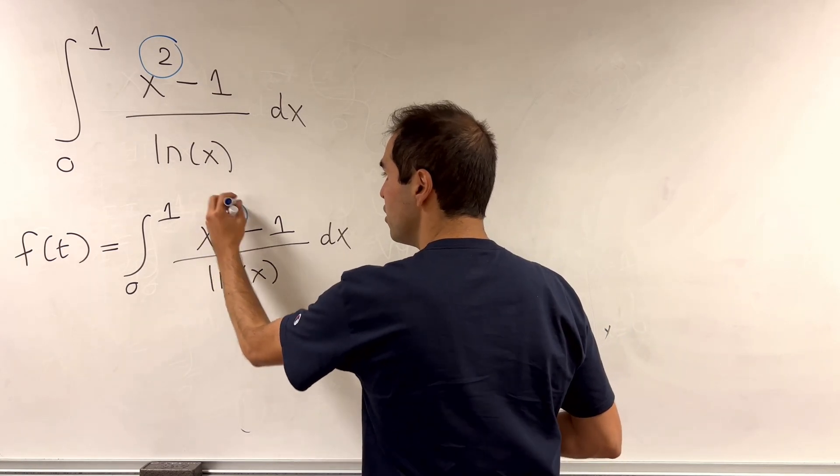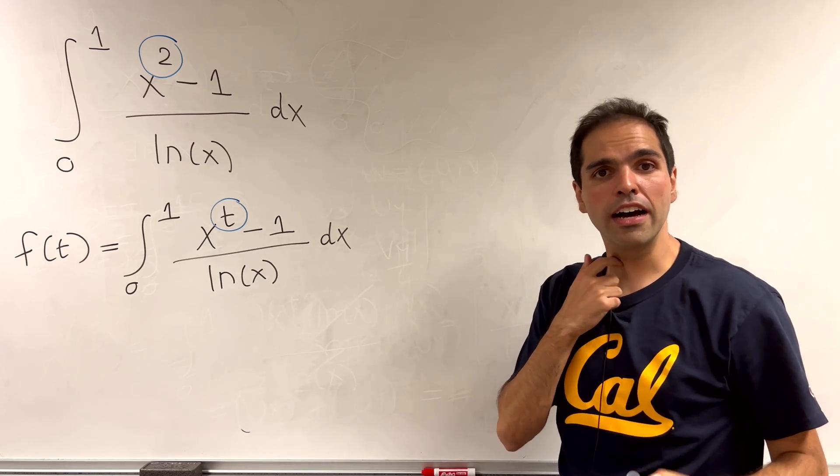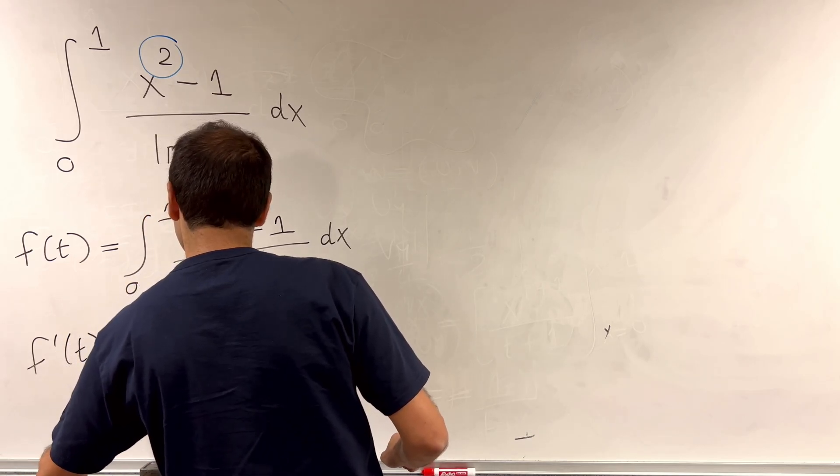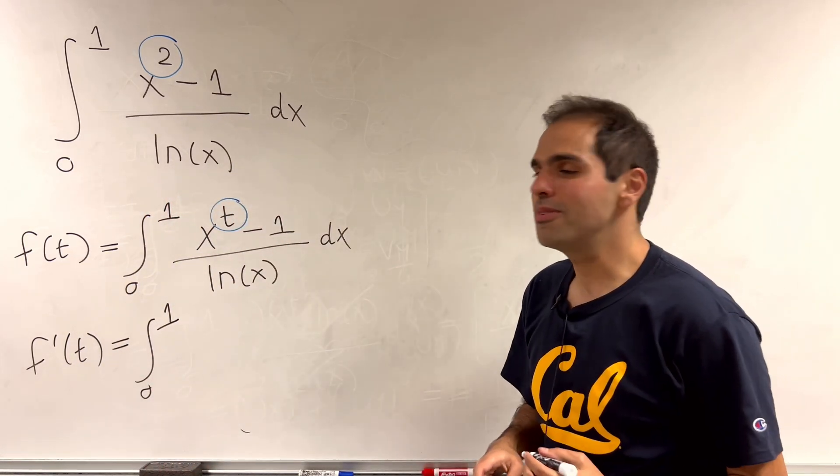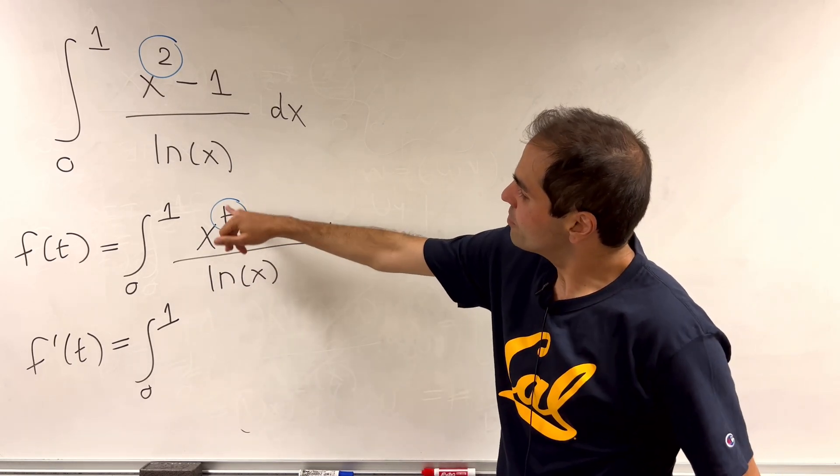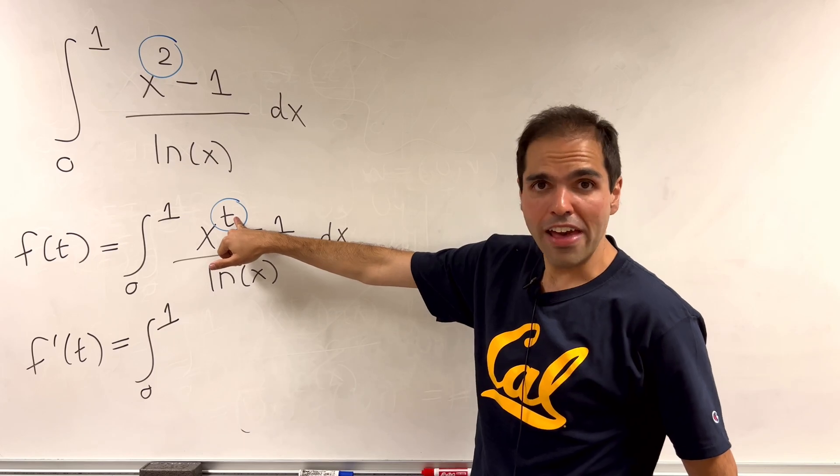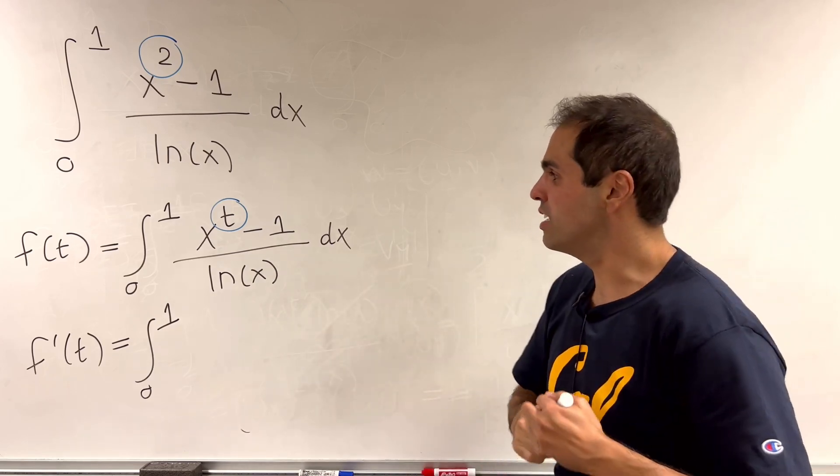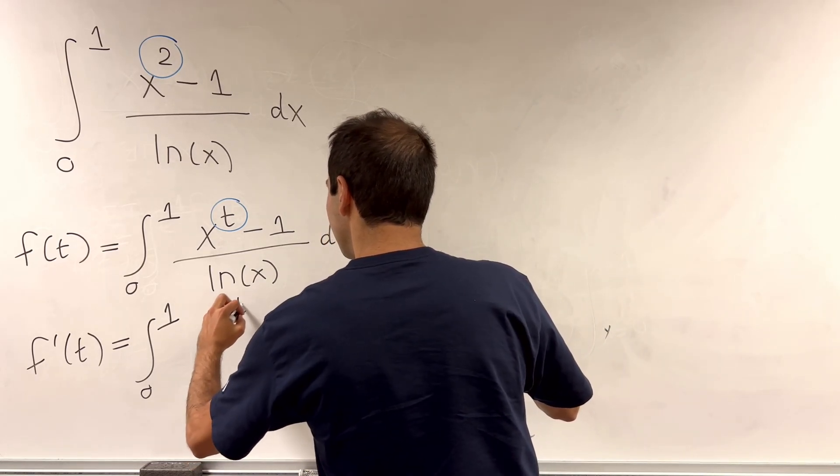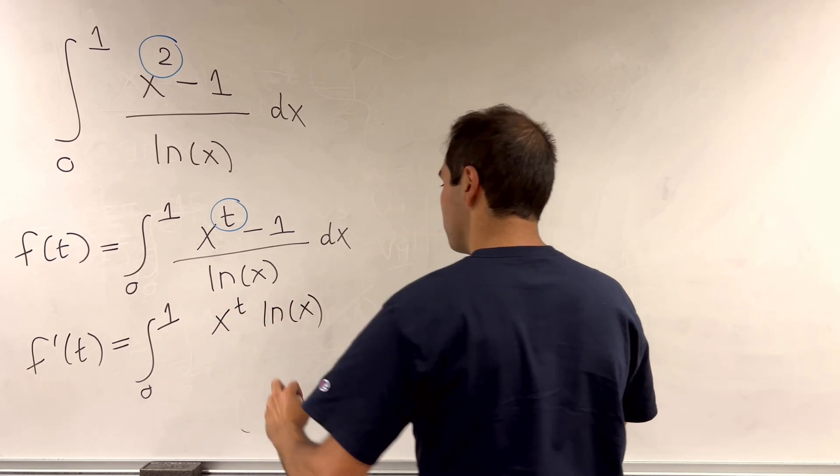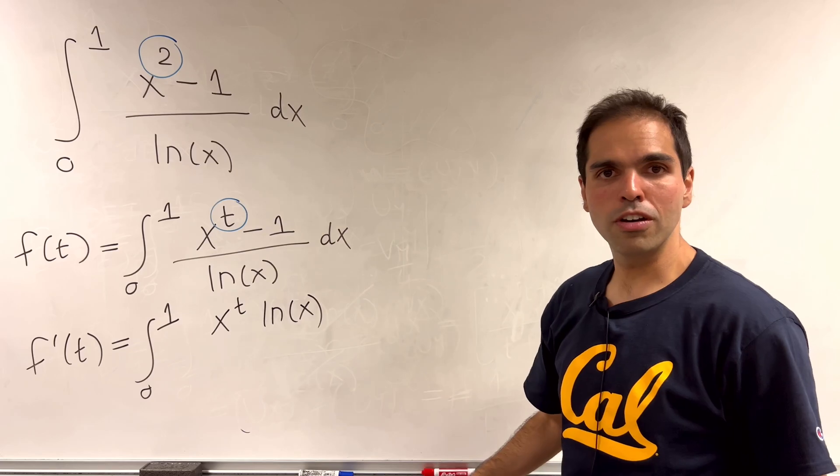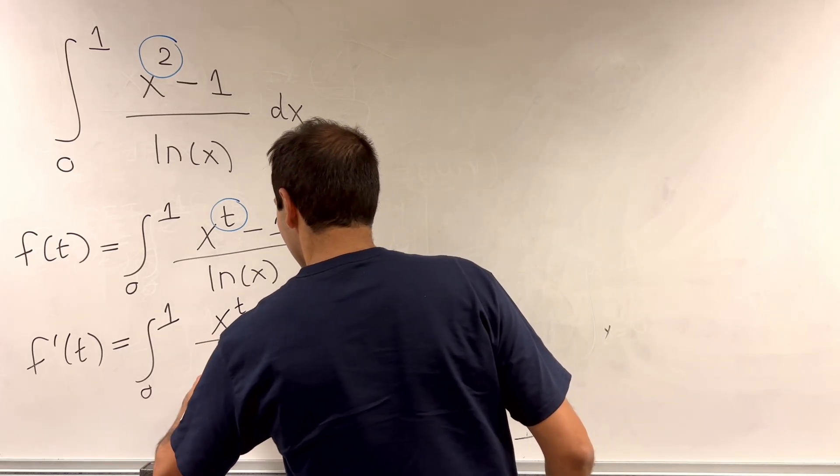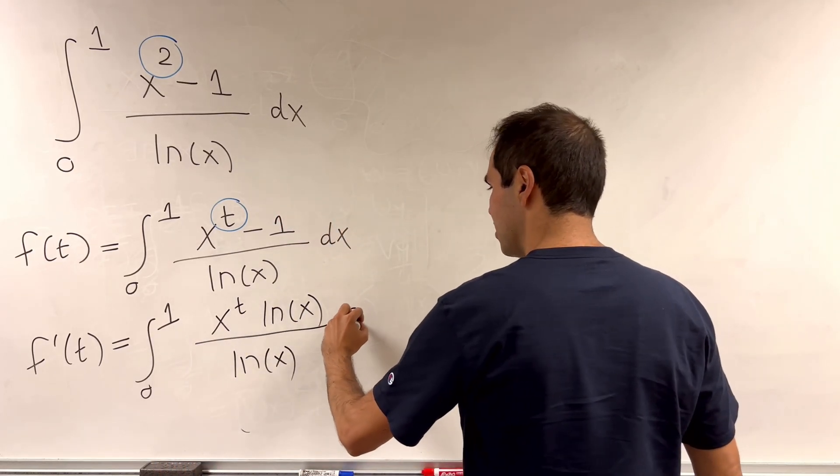And in particular, let's calculate the derivative of f with respect to t. So f prime of t equals integral from 0 to 1, and let's put the derivative inside. The derivative of x to the t with respect to t, that's like differentiating 2 to the t, and it becomes x to the t times ln of x. And this minus 1 becomes 0, and this ln of x is just a constant with respect to t. So we're still left with ln of x dx.